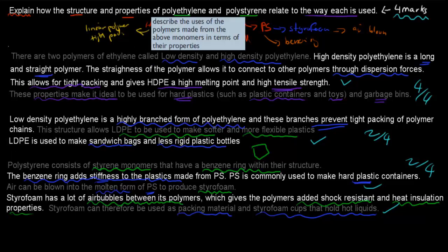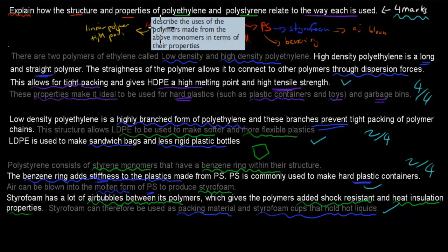Where does this question come from? It comes from this syllabus dot point: describe the uses of polymers made from the above monomers in terms of the properties. That's exactly what we've done here. The above monomers were polystyrene, polyvinyl chloride, low-density polyethylene, and high-density polyethylene. This question asked us about polyethylene in terms of high-density and low-density and polystyrene.